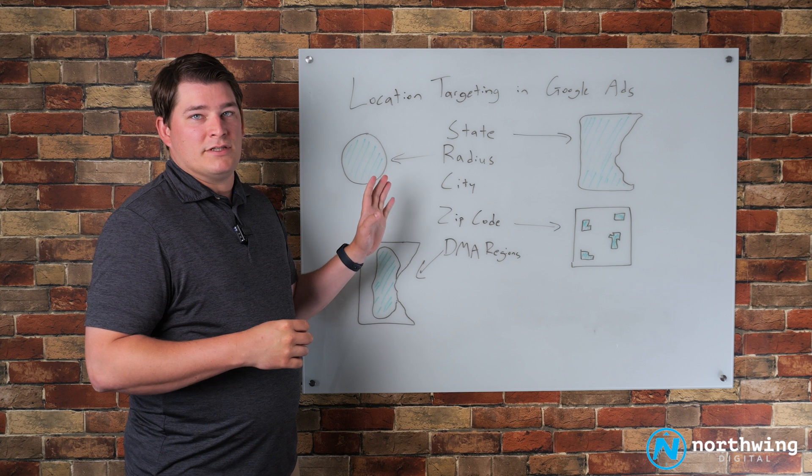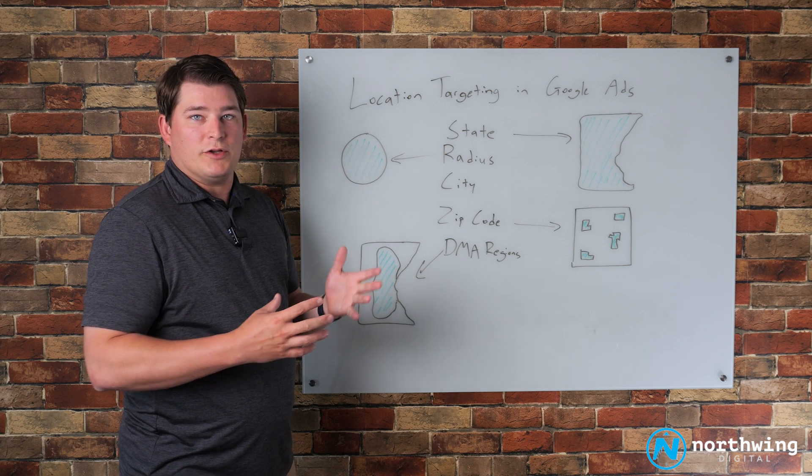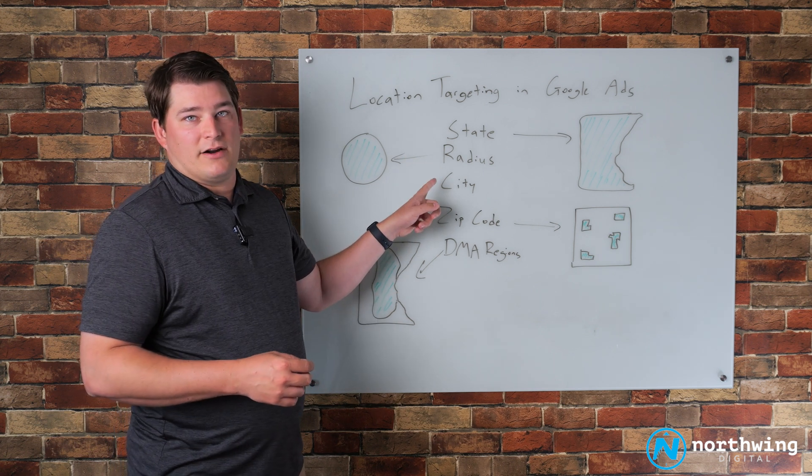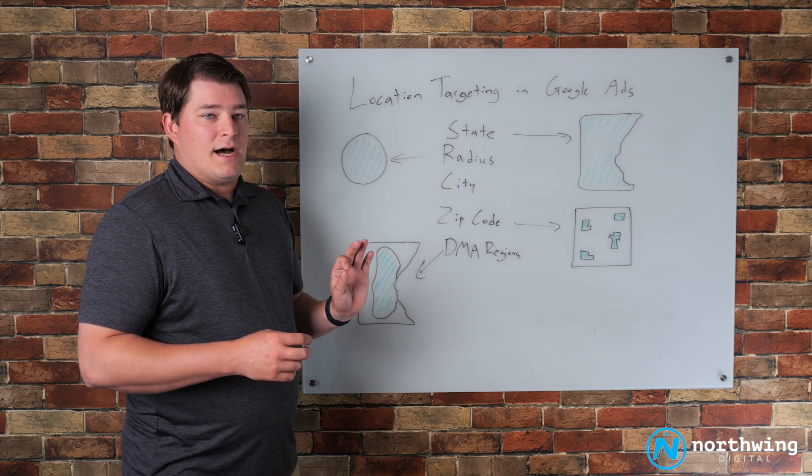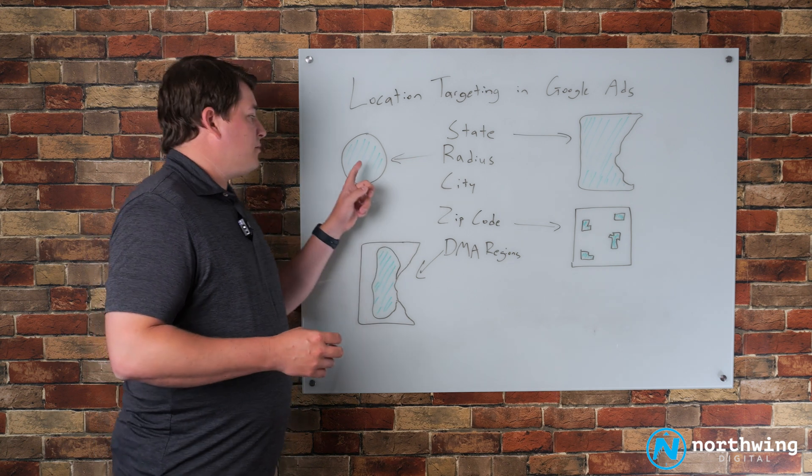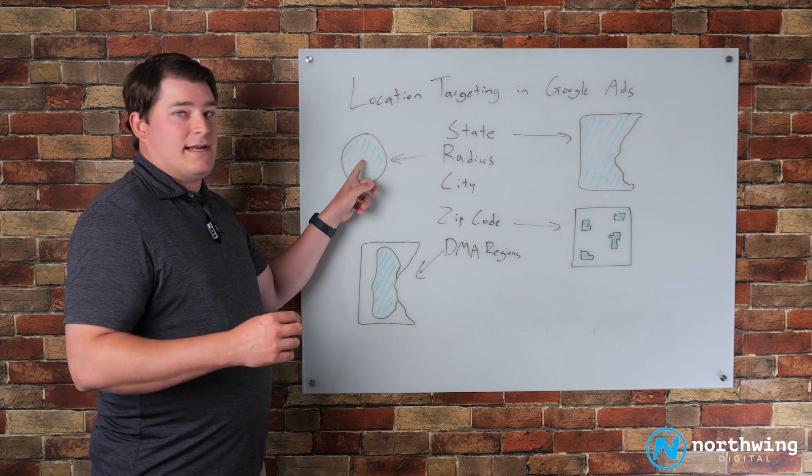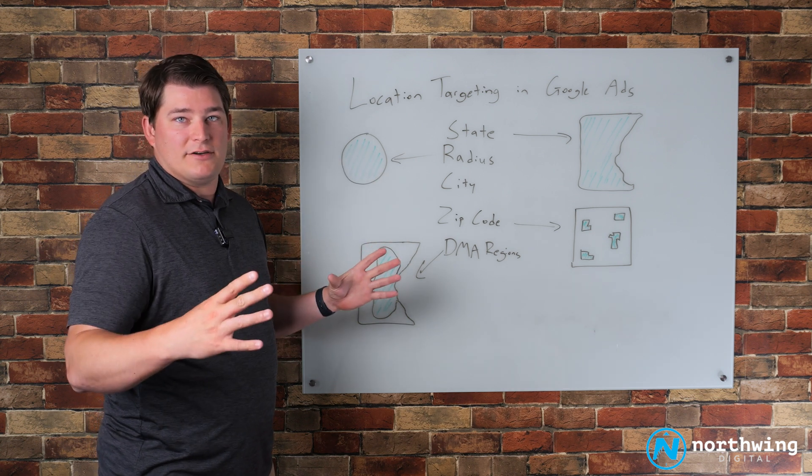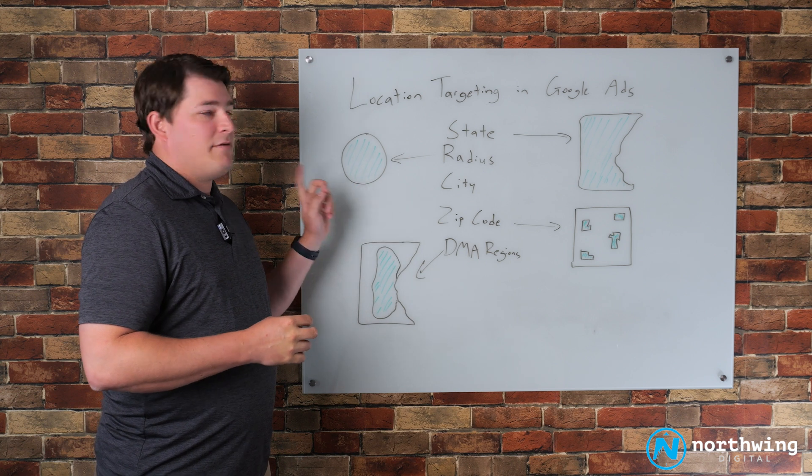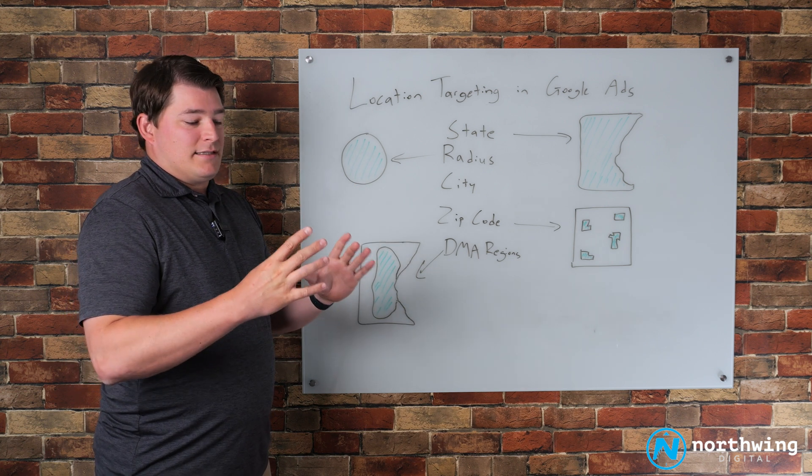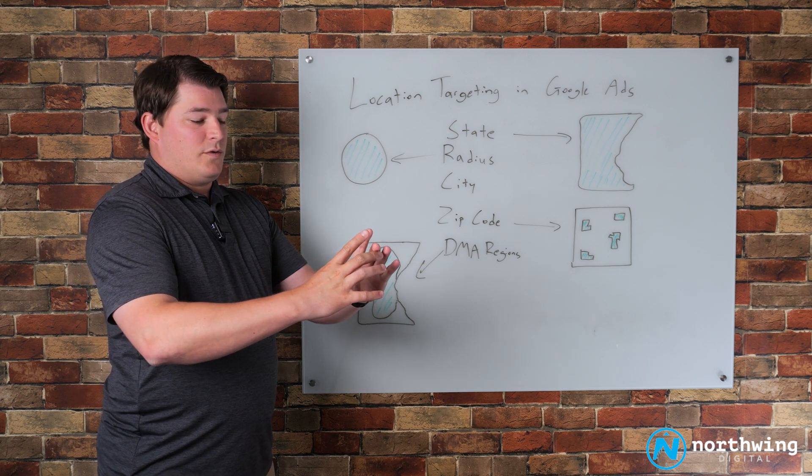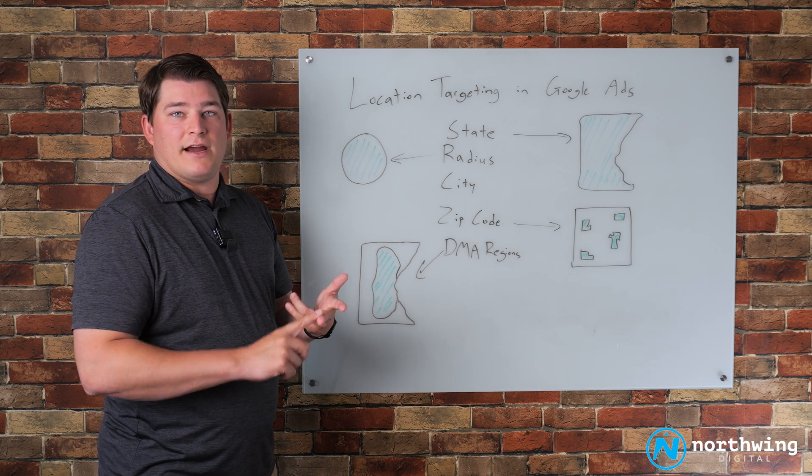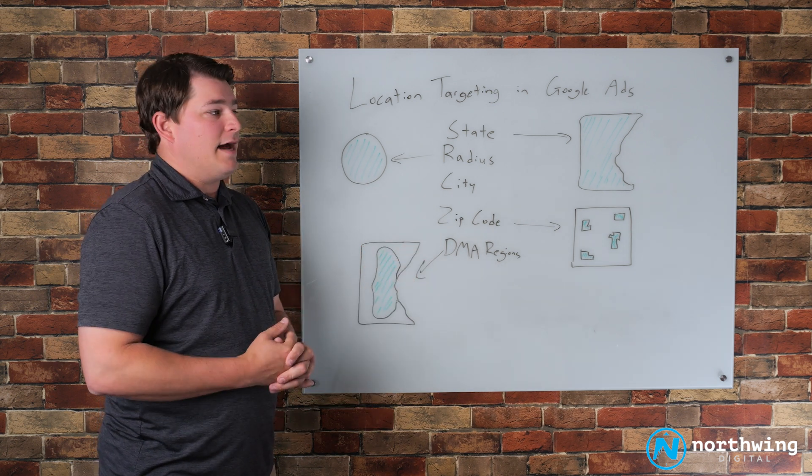What we end up using for the vast majority of our local service campaigns that have a service area smaller than a state is radius targeting. The reason why is that this allows you to literally go into the Google Ads interface, put a pin on a map, and program in how big of a radius around that pin drop you want to service. The reason that we end up doing this is it's relatively straightforward to put those radius areas around specific cities, specific areas, and then you capture everywhere within that radius.